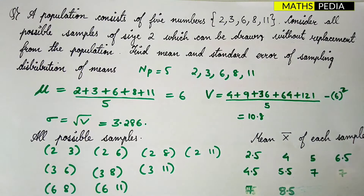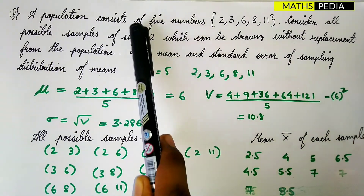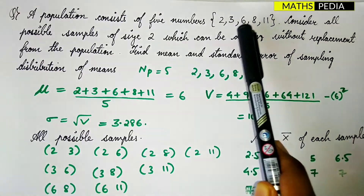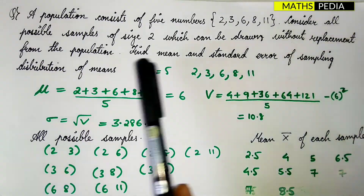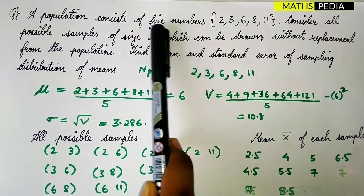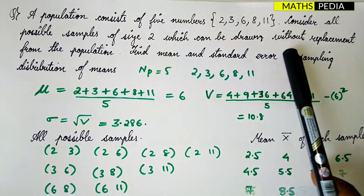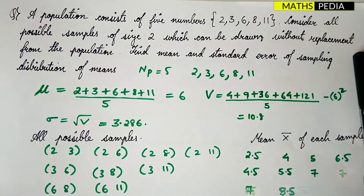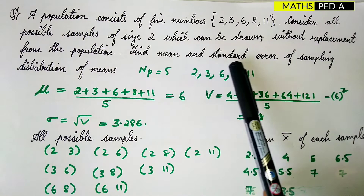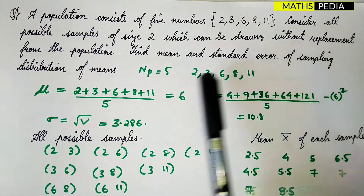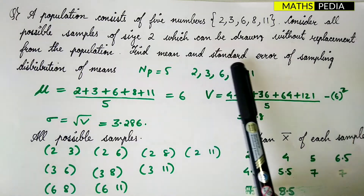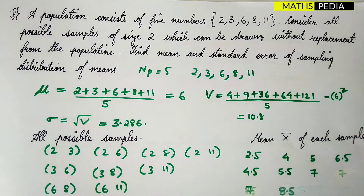The first problem: a population consists of five numbers — 2, 3, 6, 8, 11. Consider all possible samples of size two which can be drawn without replacement from the population. Find the mean and standard error of the sampling distribution of means. Note: standard error is basically the standard deviation.